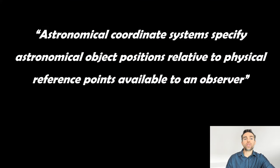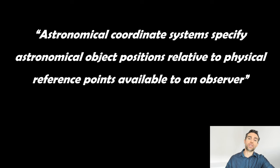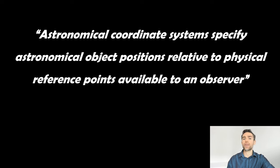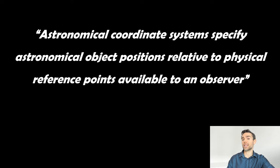Astronomical coordinate systems basically specify astronomical object positions relative to some physical reference points available to the observer. As we look at stuff in the sky we use something relative to us to get a position to that particular object, and depending on the coordinate system we use it will either change or it won't change. With the altitude-azimuth system the objects in the sky will obviously change as the Earth rotates. With the equatorial style mount they do change in the sky, but you'll have a right ascension and declination position which is fixed on the celestial sphere, and you move your telescope to suit.